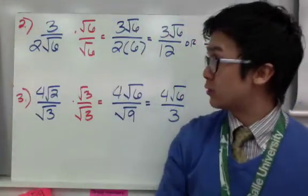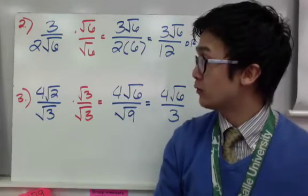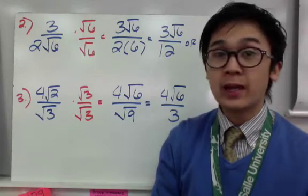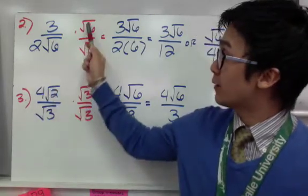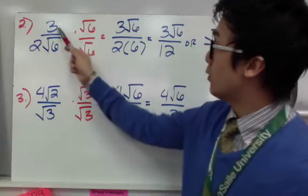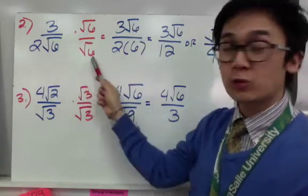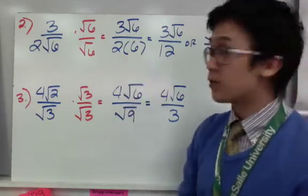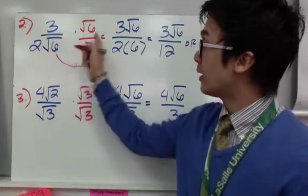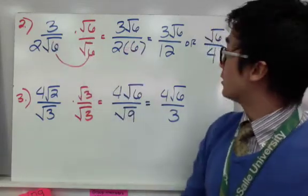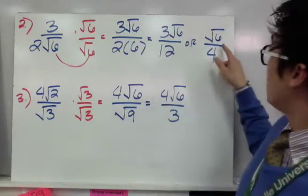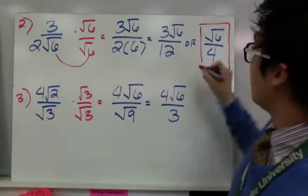For these two examples, I have 3 over 2 square root of 6, and 4 square root of 2 all over the square root of 3. Both need to be rationalized because there is a radical symbol in the denominator. For number 2, instead of multiplying by 2 square root of 6, you can simply multiply by the square root of 6. So you get 3 square root of 6 over 2 times 6, because multiplying the same square roots eliminates the radical, leaving the radicand. You have 3 square root of 6 over 12, which simplifies to square root of 6 over 4.